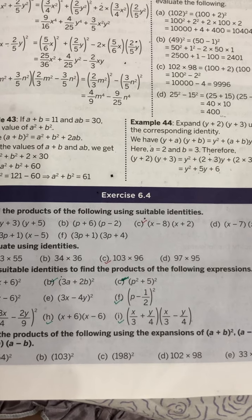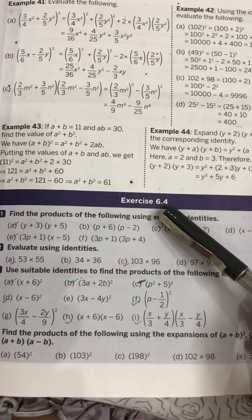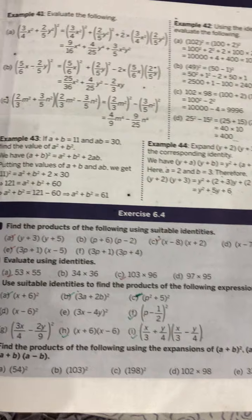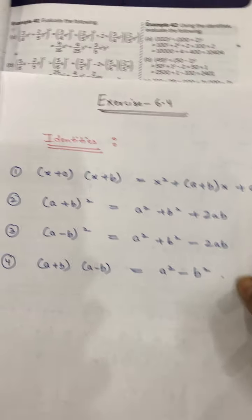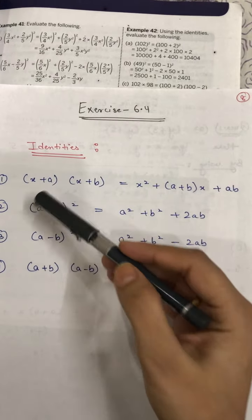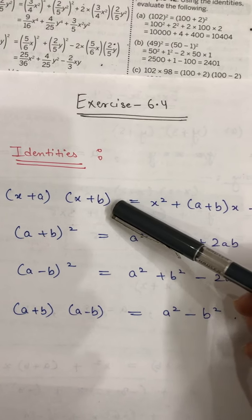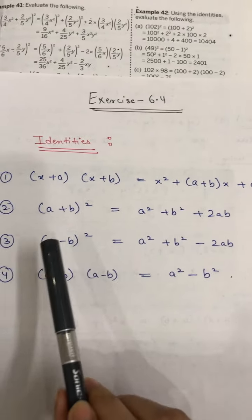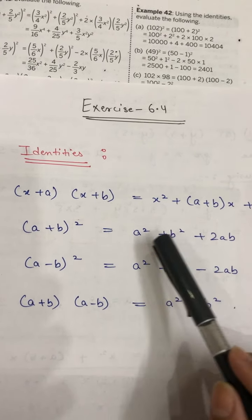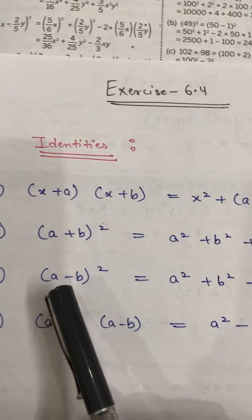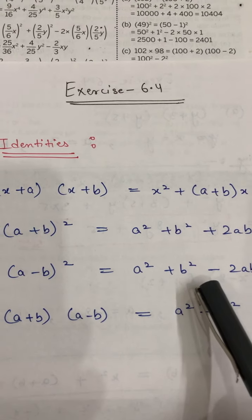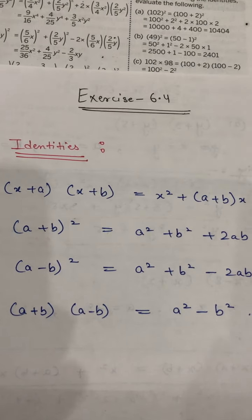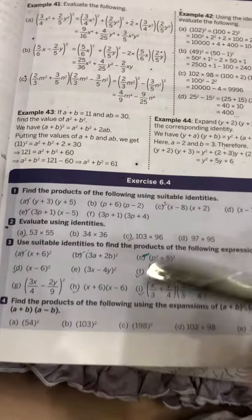Good morning students. Today we are going to start Exercise 6.4, which is based upon algebraic identities. We have four identities to discuss and use in this exercise. The first is (x+a)(x+b) = x² + (a+b)x + ab. The second is (a+b)² = a² + b² + 2ab. The third is (a-b)² = a² + b² - 2ab. The last is (a+b)(a-b) = a² - b².